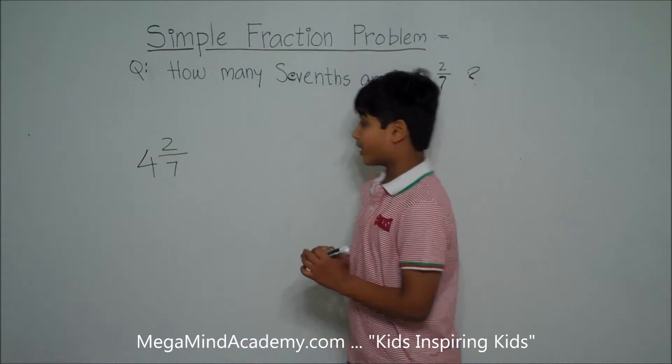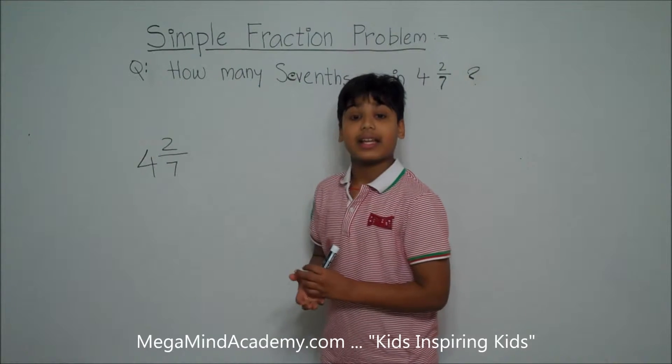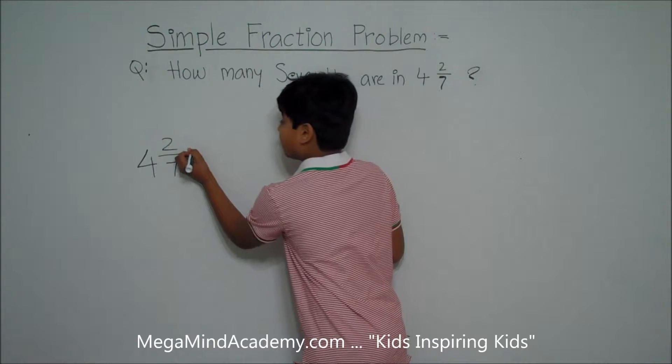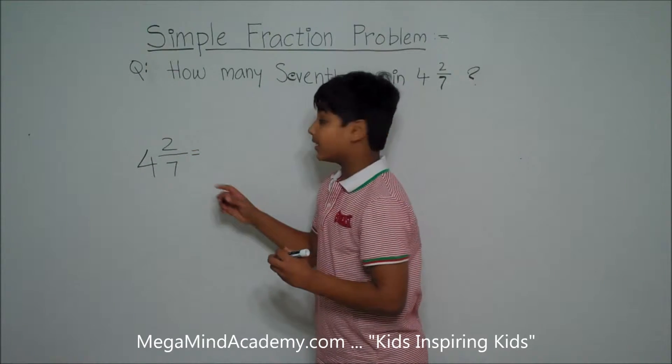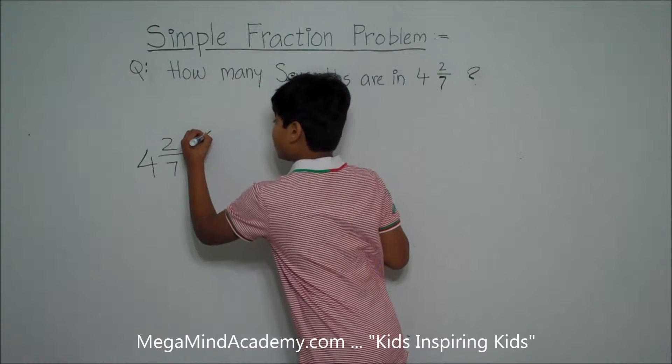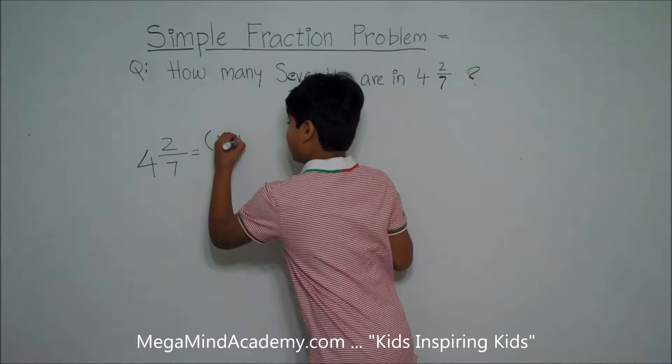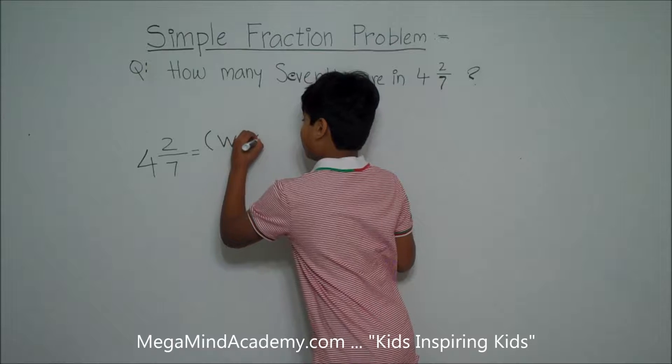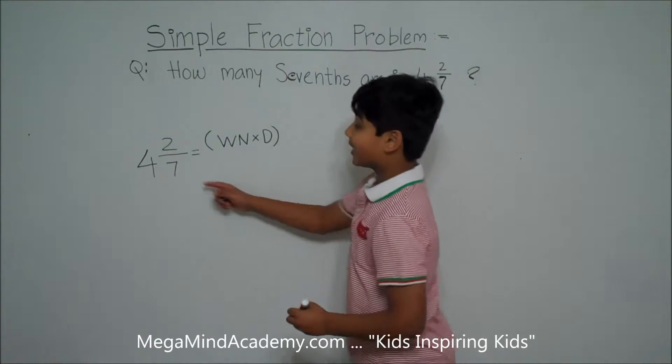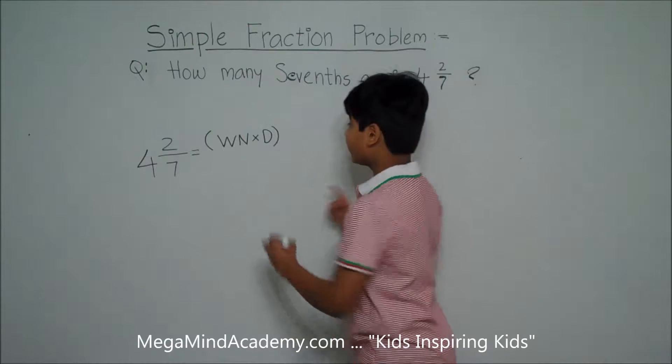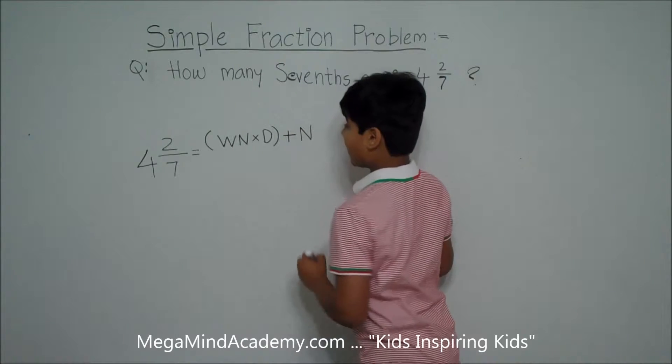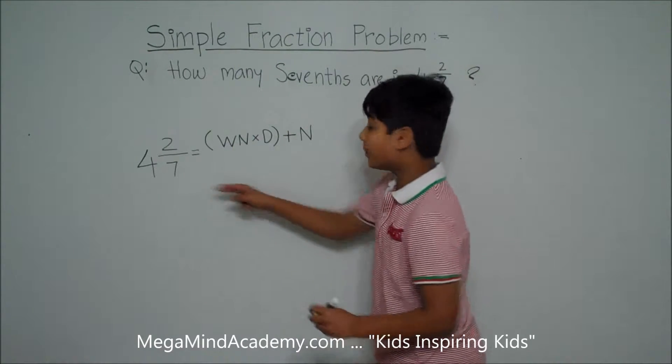The way we convert 4 and 2 sevenths into an improper fraction is we multiply the whole number by the denominator. Then we add it with the numerator. Then we divide it by the denominator.